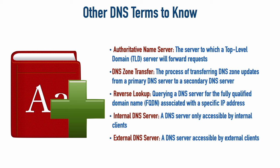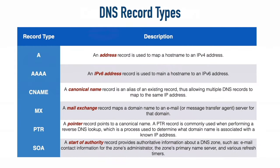When configuring your second-level domain, you'll be entering different types of DNS records. The most common is an A record — an address record that translates a fully qualified domain name into a corresponding IPv4 address. For example, the translation of kwtrain.com to its IPv4 address was possible due to an A record. For IPv6, there is the AAAA record type.